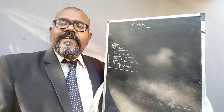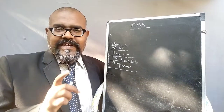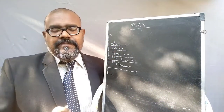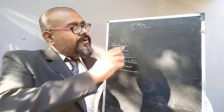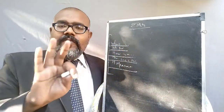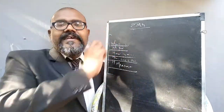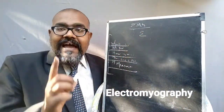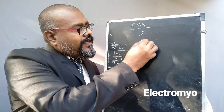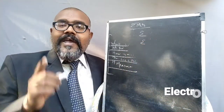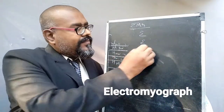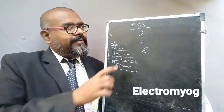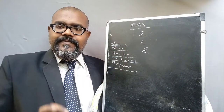The first question is: What is EMG? Three terms can be abbreviated as EMG — that is Electromyography, Electromyograph, and Electromyogram. All three things are abbreviated as EMG.